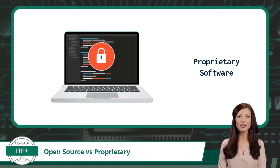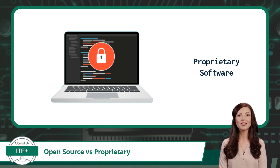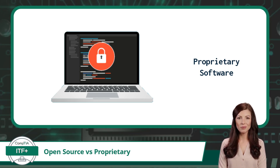As for proprietary software, picture this as a secret recipe that only a specific chef knows. The source code is kept hidden, and you usually have to pay to use the software. It's like ordering a dish at a restaurant — you don't know exactly what goes into it, but it is expected that it will taste good.